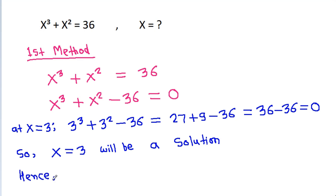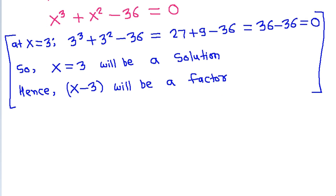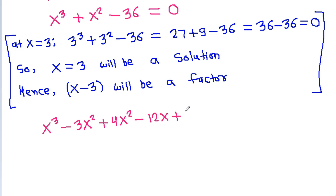Hence, x minus 3 will be a factor. So, dividing: x cubed plus x squared minus 36 gives x cubed minus 3x squared, then minus 4x squared, and subtracting 12x and adding 12x and minus 36, it is equal to 0.